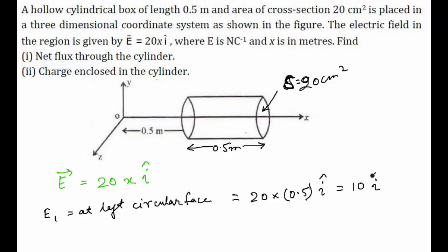Similarly, E₂ at the right circular face equals 20 times the net distance from the origin, which is 0.5 + 0.5 = 1 meter, so E₂ = 20 î. The first part is to find the net flux through the cylinder.